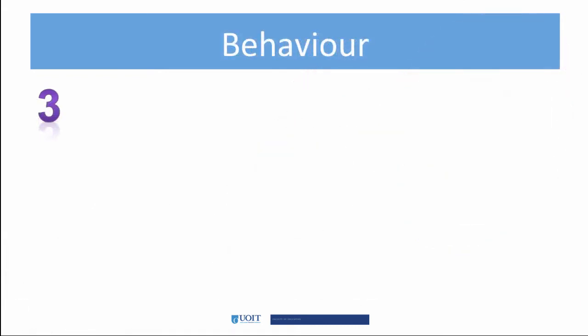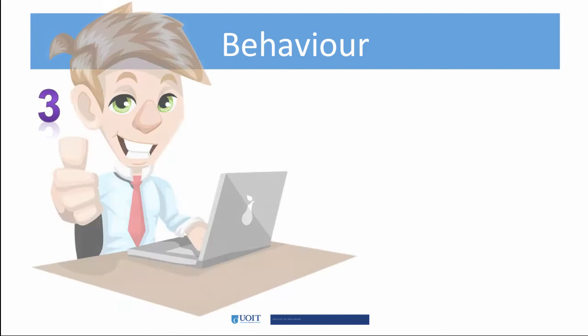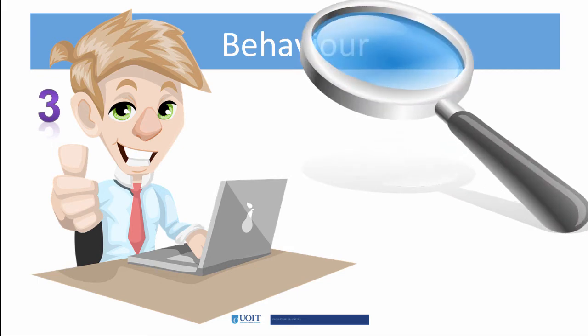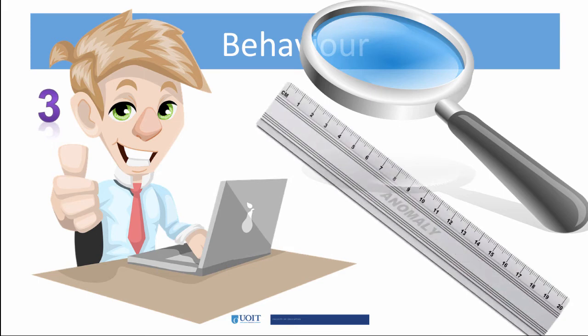The third level is behavior. This level ascertains whether participants actually changed their behavior after completing the training. Participants may have learned the new information, but it is equally important to see if they are applying the new knowledge. If they aren't applying it, it's equally important to discover why. There may be hindrances in the workplace that are preventing the change in behavior. Measuring changes in behavior should occur directly after training and then again sometime after training is complete, to indicate if participants have adopted, rejected, modified, or discontinued applying their new knowledge.